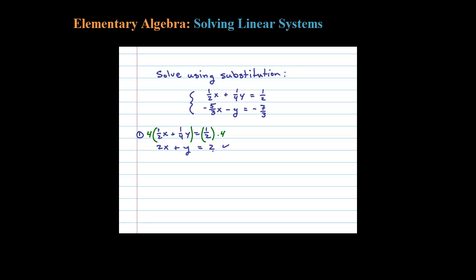Let's look at the next one: -5/3 X minus Y equals -7/3. Here if I multiply both sides by the LCD 3, I can clear the equation as well. It's perfectly legal because you're multiplying both sides by the same number. 3 times -5/3 is -5X, 3 times -Y is -3Y, 3 times -7/3 is -7.